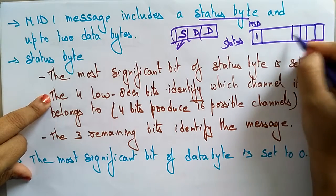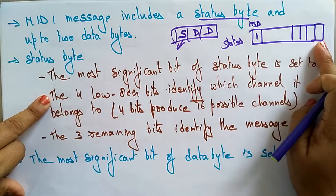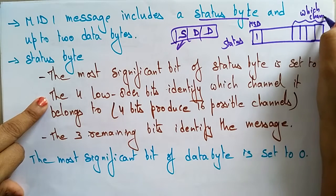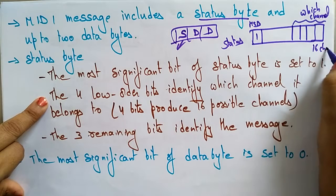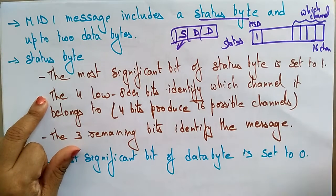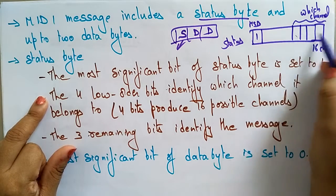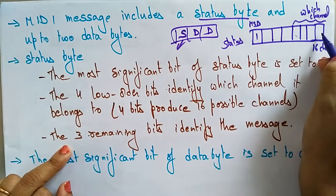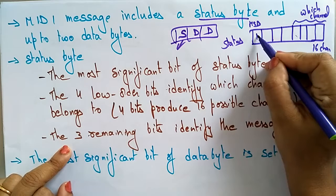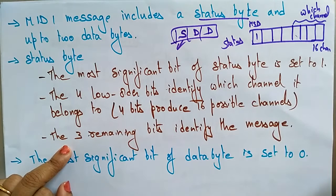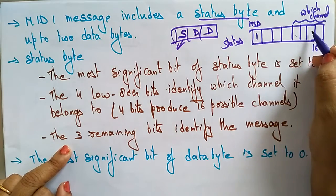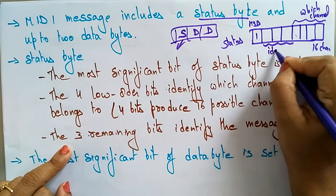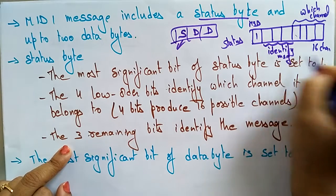In the status byte, the four low-order bits identify which channel it belongs to. Since there are 16 possible channels in MIDI, four bits produce 16 possible combinations. Of the remaining bits, the first bit is the MSB — set to one for a status byte — and the three remaining bits identify what type of message is being sent.